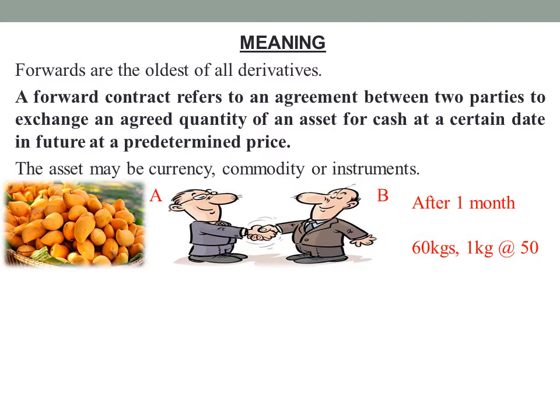The quantity agreed is 60 kilos and the price is 50 rupees per kilo, and the transaction date will be after one month. After one month, depending on the market situation, whether the price increases or decreases, any one of the two parties will be benefited with this contract.